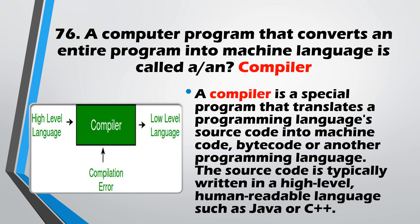Question No. 76: A computer program that converts an entire program into machine language is called a Compiler. A compiler converts a high-level language into low-level machine language, translating the complete program all at once in a single pass.